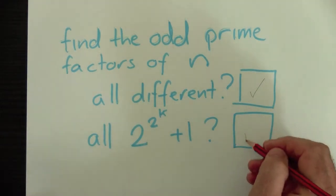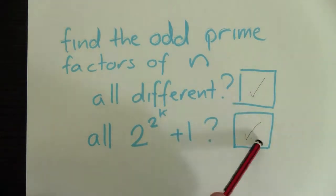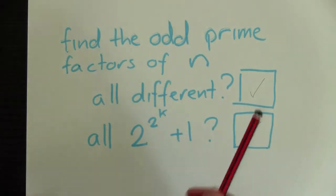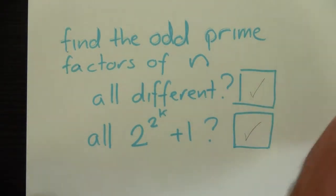We can make, because we checked these two boxes, we can draw a regular triangle, a regular three-gon, with a ruler and compass.